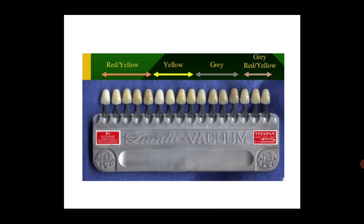The letter — for example A — represents the basic color, which is the hue. The numerical value — A1, A2, A3 — represents the degree of saturation of that color, which is the chroma. Similarly in the yellow group, the first tooth is the lightest and the fourth is the darkest. The same is true for the gray group and the last group as well. This is how you read the VITA shade guide.